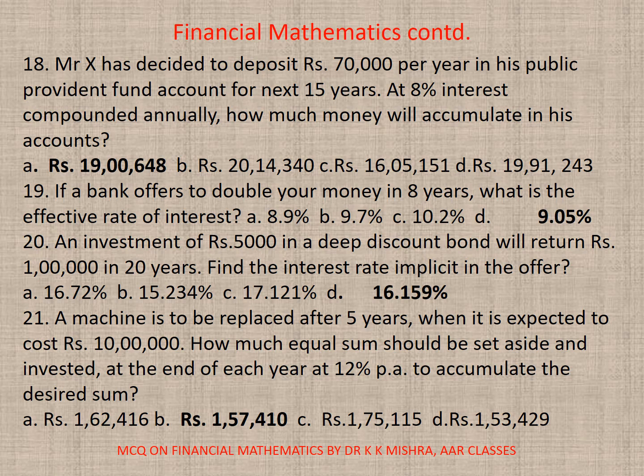Question 19: If a bank offers to double your money in 8 years, what is the effective rate of interest? The correct option is D — 9.05%.